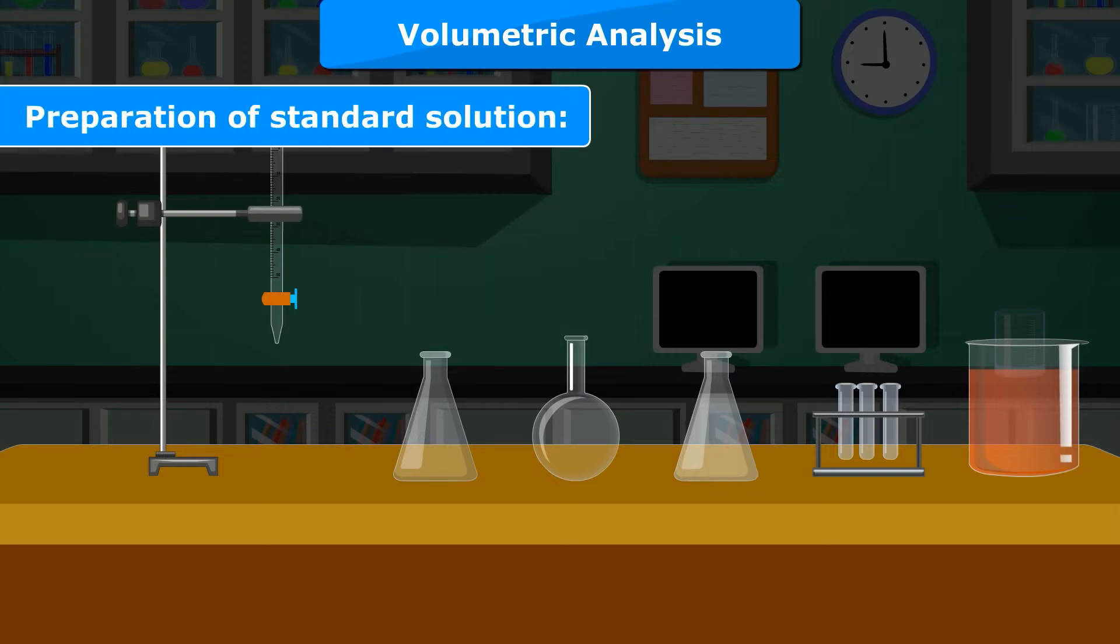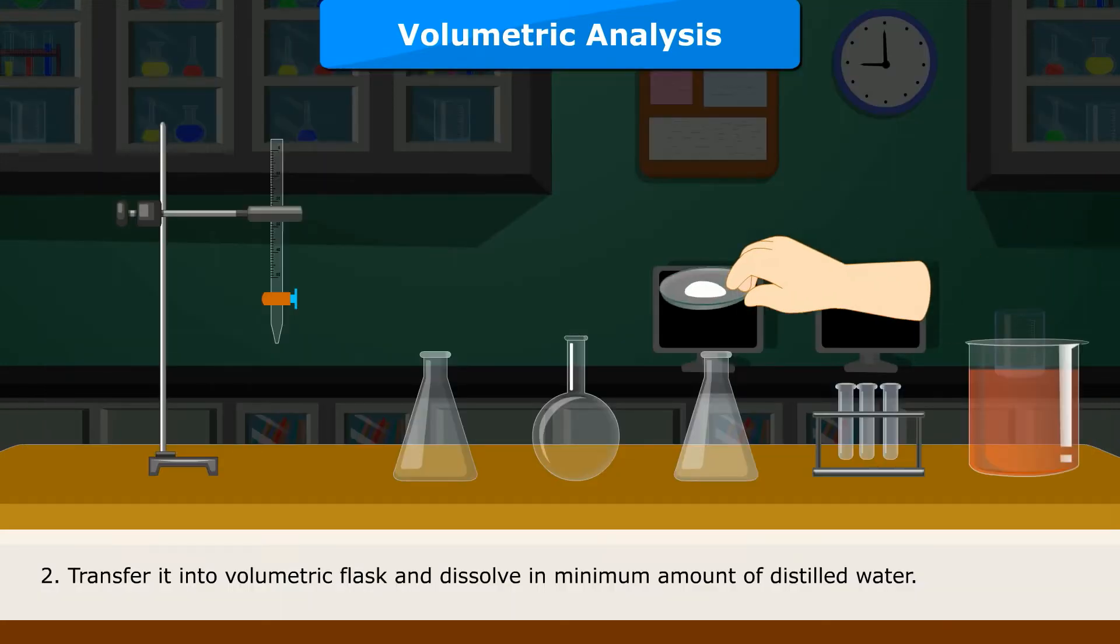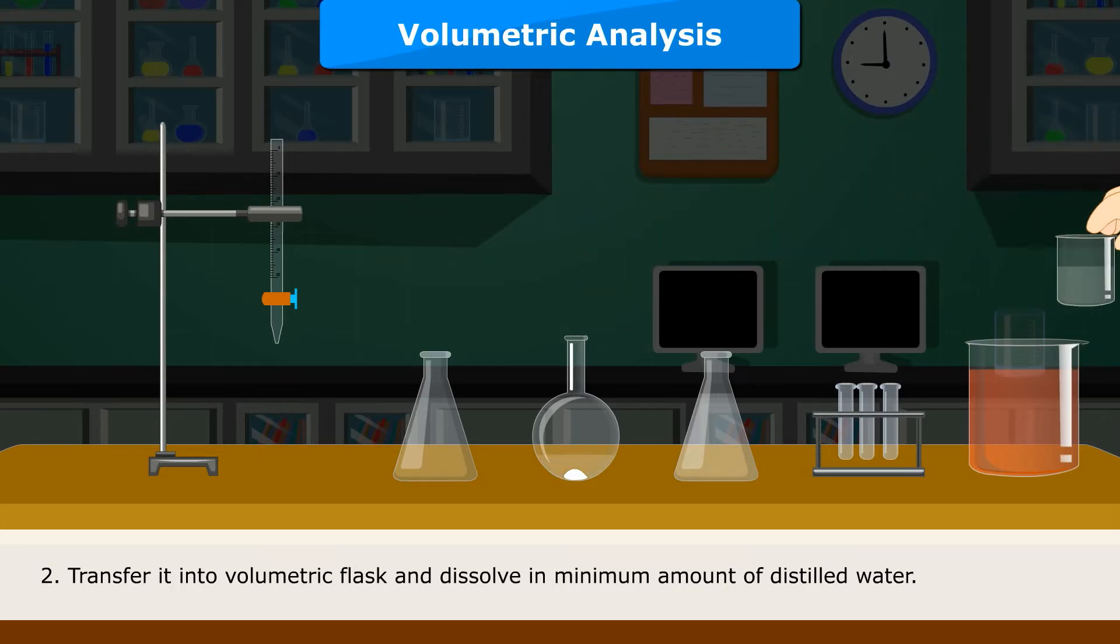Preparation of Standard Solution: Measure and weigh exactly 0.63 gram of Na2CO3. Transfer it into Volumetric Flask and dissolve in minimum amount of distilled water.